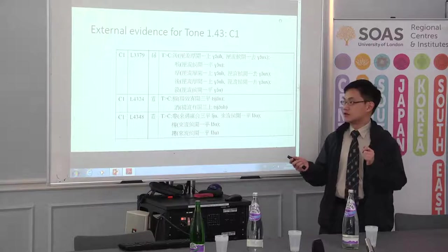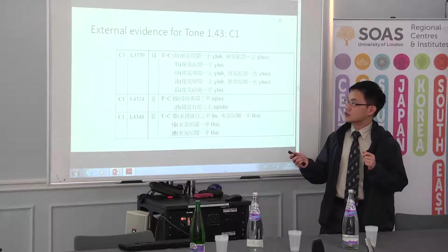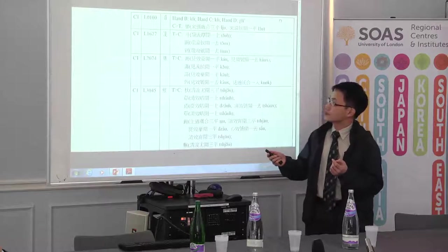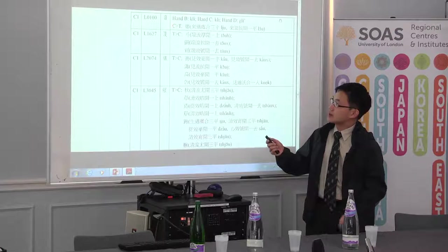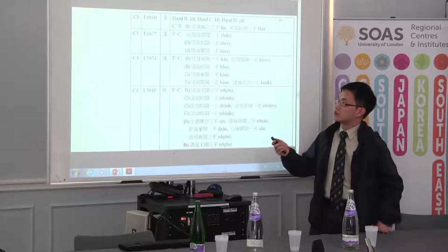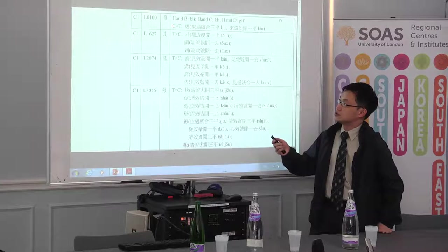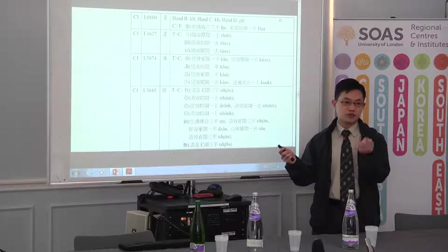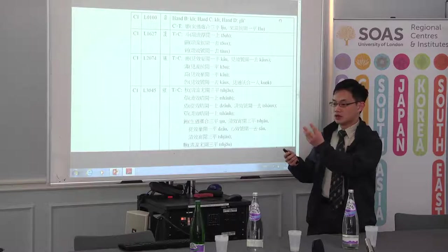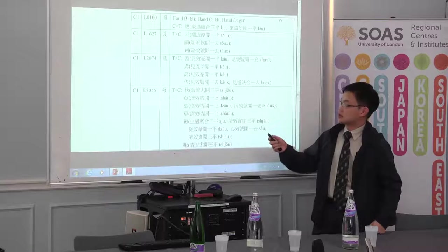For example, for the data from Zhanzhongzhu, the direction of transliteration is very important, because if it is using a Tangut character to transliterate Chinese characters versus a Chinese character used to transliterate Tangut characters, we can propose that the Chinese character used to transliterate Tangut characters should be closer to the Tangut pronunciation, rather than the other way around. So the direction is important.